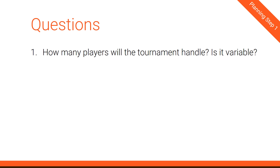Question one: how many players will a tournament handle? Is it a variable number? That's not been specified. The NCAA tournament is a fixed 68 teams, but this might not be a fixed bracket — we need to confirm by asking. Question two: if a tournament has less than a full complement of players, how do we handle it? What if we had three players? Most tournaments use the concept of a bye — certain teams get a free pass and automatically advance to the next round.